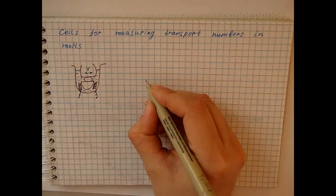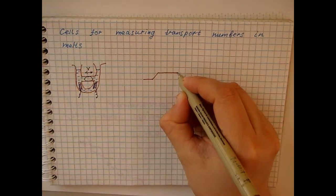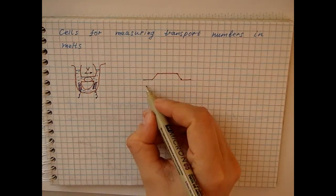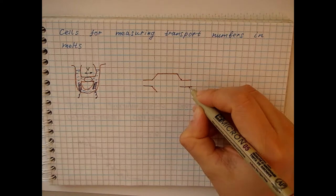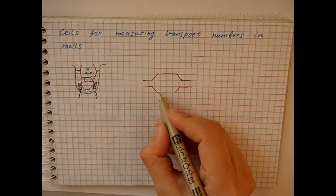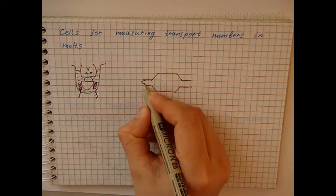In another cell design, hydrostatic flow is prevented by the horizontal arrangement of the system. The transport numbers are determined by the movement of liquid electrodes that confine the melt on both sides.